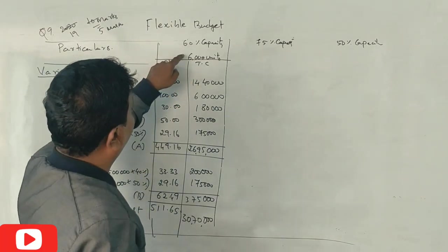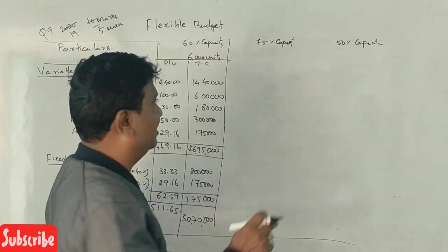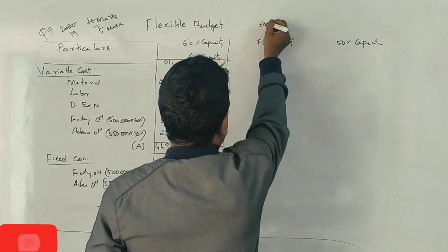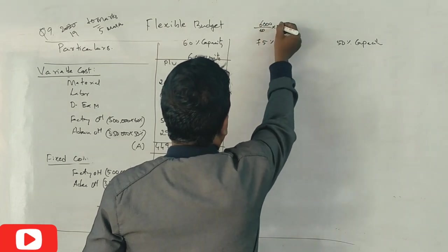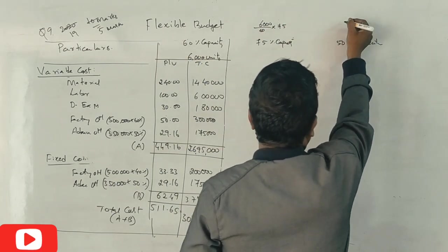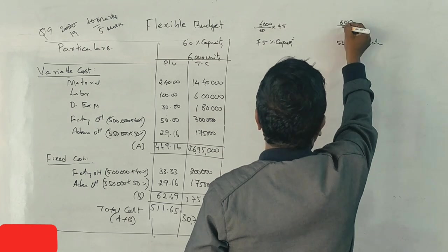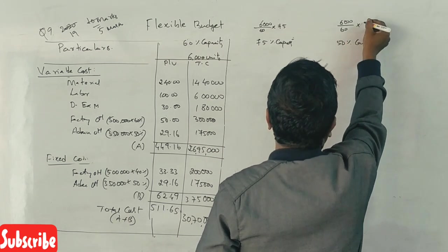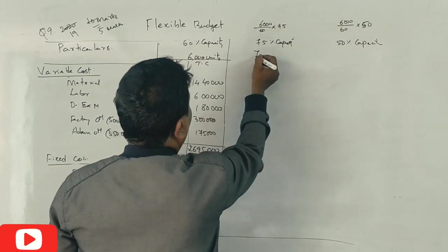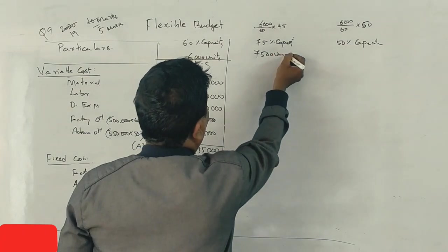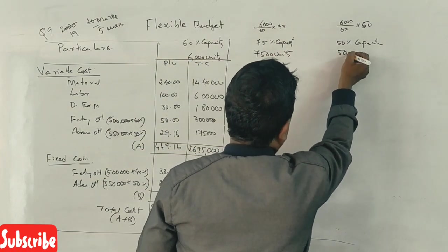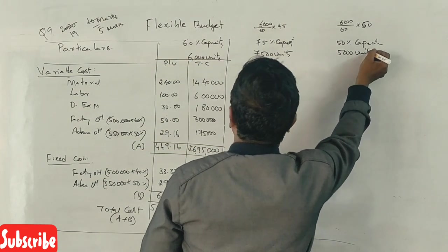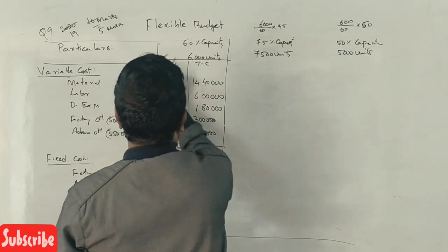6,000 units is for 60% capacity. For 75% capacity, that's 7,500 units. For 50% capacity, that's 5,000 units.